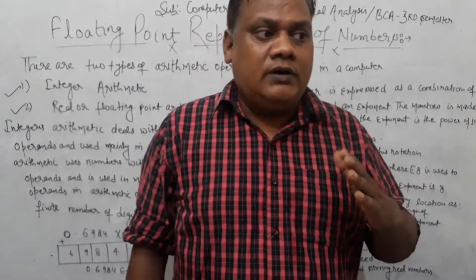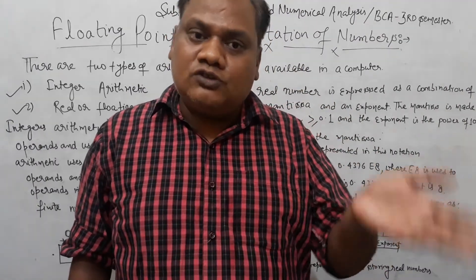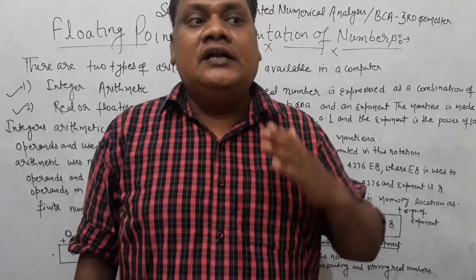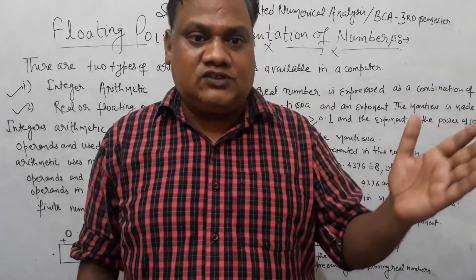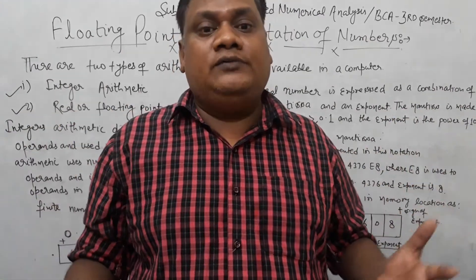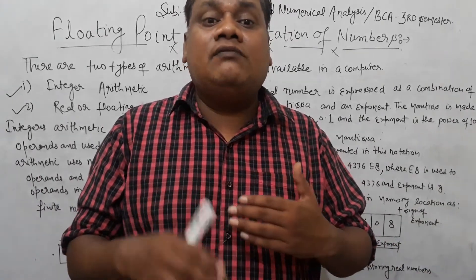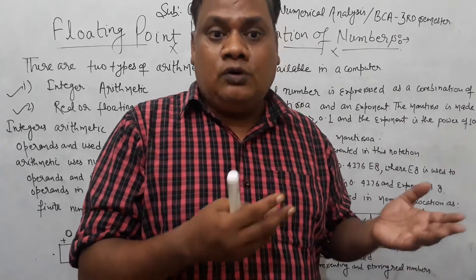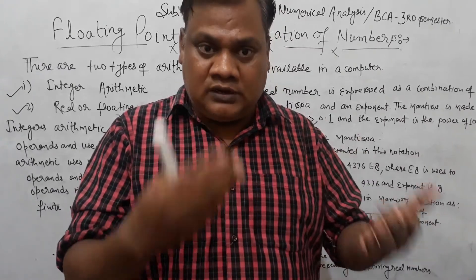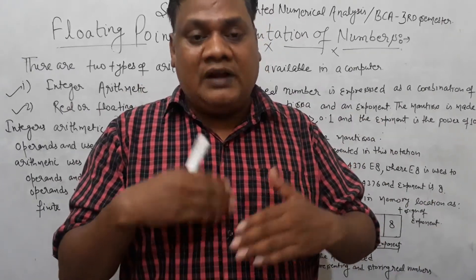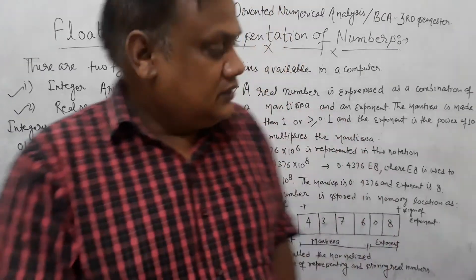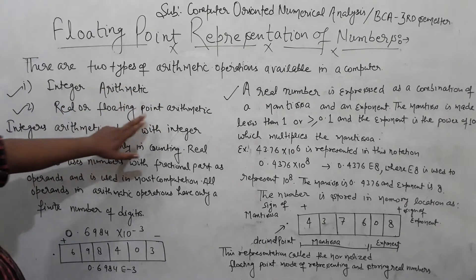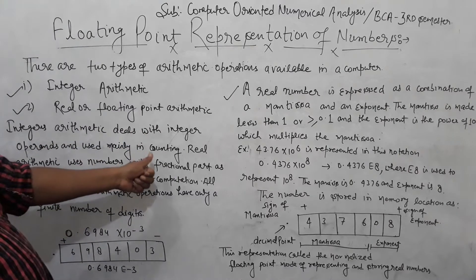Suppose there are two types of numbers: integers and real numbers. Integers are counting numbers, while real numbers — such as 47.56 — have a fractional part and are used in calculation. There are two types of arithmetic operations available in a computer: integer arithmetic and real or floating point arithmetic. Integer arithmetic deals with integer operations and is used mainly in counting.